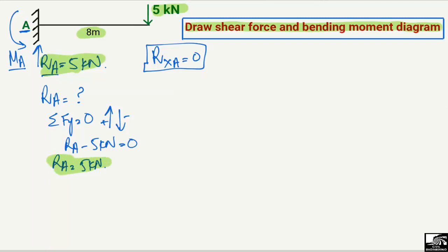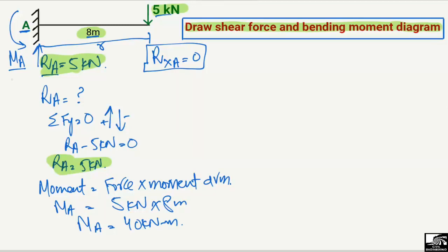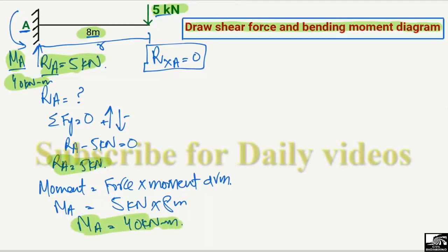Now to find the moment Ma, we use the equation: moment equals force multiplied by moment arm. The moment at point A equals the force of 5 kilonewtons multiplied by the distance from the load to point A, which is 8 meters. So the moment at point A comes out to be 5 × 8 = 40 kilonewton·meters.